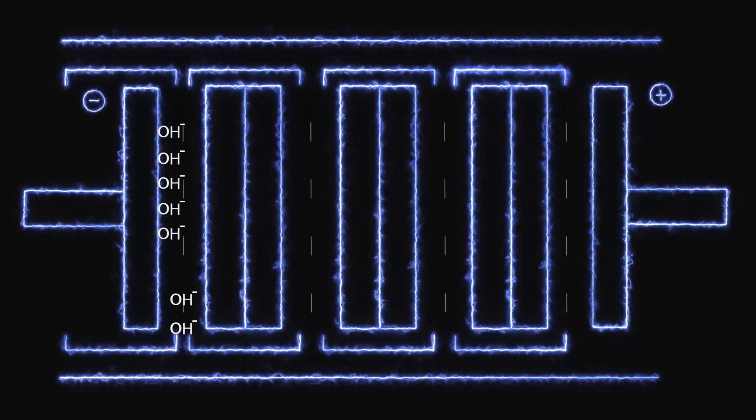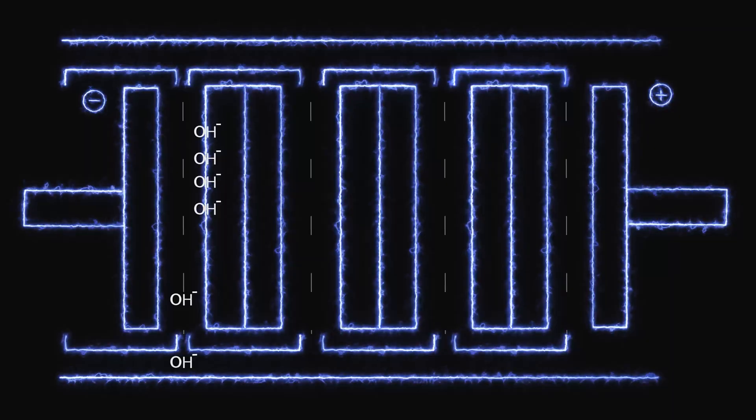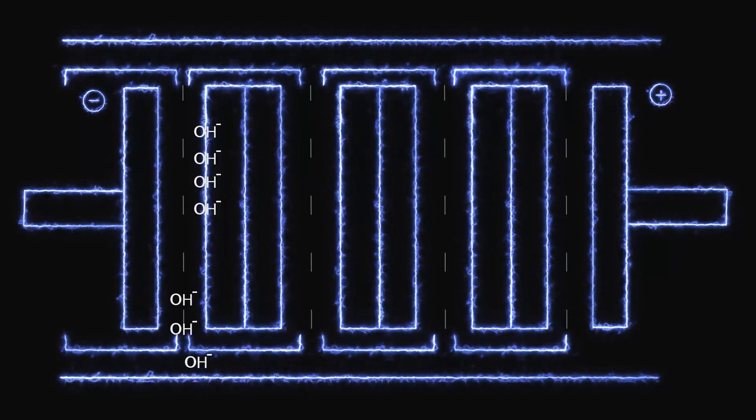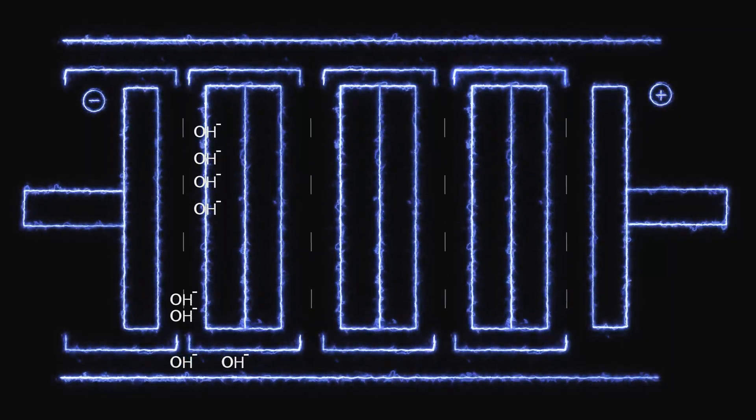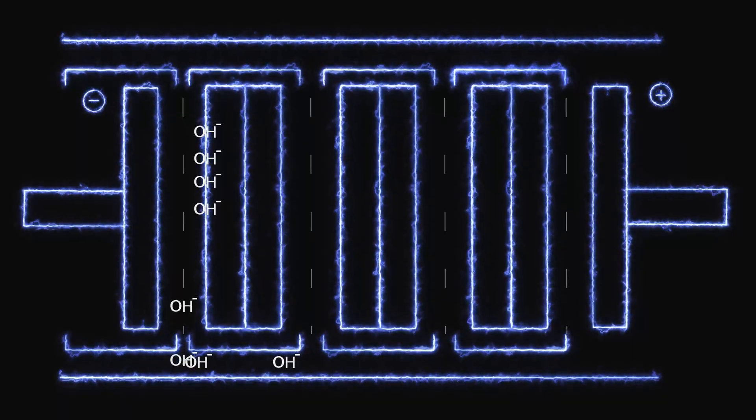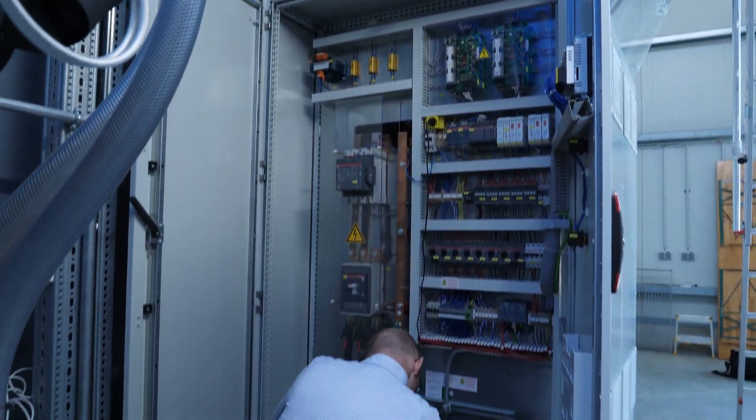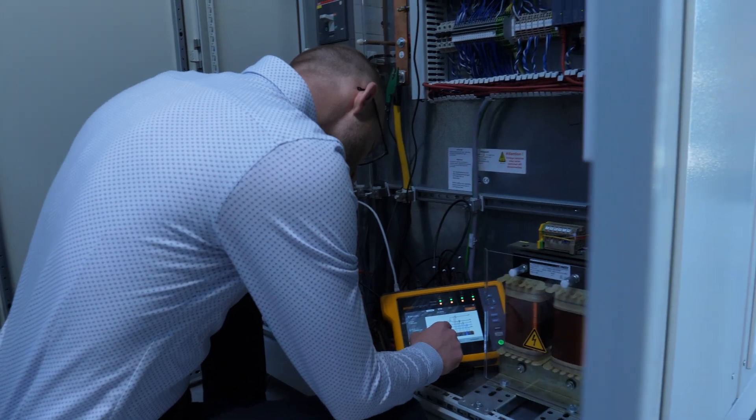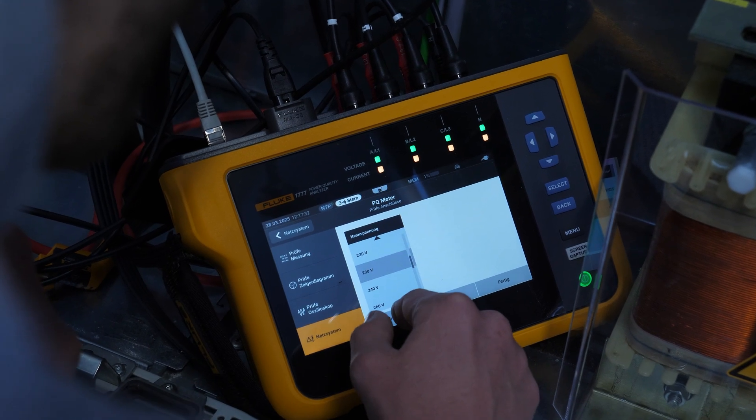Stray currents refer to unwanted electrical currents that occur outside the intended path of current flow due to ion conducting properties of the electrolyte. Stray currents can negatively impact the efficiency and lifespan of water electrolysis stacks.